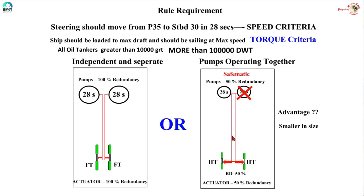The rule requirements demand minimum redundancy criteria for different types of ships. What is actually fitted must be at least equal to the minimum redundancy criteria or exceed the rule requirement. You may ask: what is the great advantage of safematic steering? Every pump is capable of operating the steering in 28 seconds. When you think about it, the advantage is smaller size. If you have a safematic steering capable of automatically detecting and isolating the defective side, the rule allows both pumps together to operate the steering gear — so the size of the pump and actuator reduces.